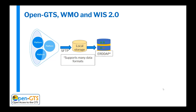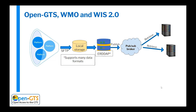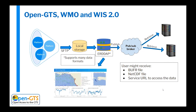Here's what an example future workflow might look like with the OpenGTS services and WIS 2.0. It's very similar to how we grab data before — we support many formats from platform and data providers and put that data into ERDDAP. The big difference is the integration of a publish-subscribe broker like MQTT, which takes the place of the GTS. People interested in the data will subscribe, and when the data is published to the pubsub broker, they will be notified that data is there to retrieve. Users might receive a BUFR file, a NetCDF file, or simply a service URL to access the data directly — there are many options still being worked out. The nice thing is that the data is still in the ERDDAP service and still available to the general public who may not be able to deal with the pubsub complexity.